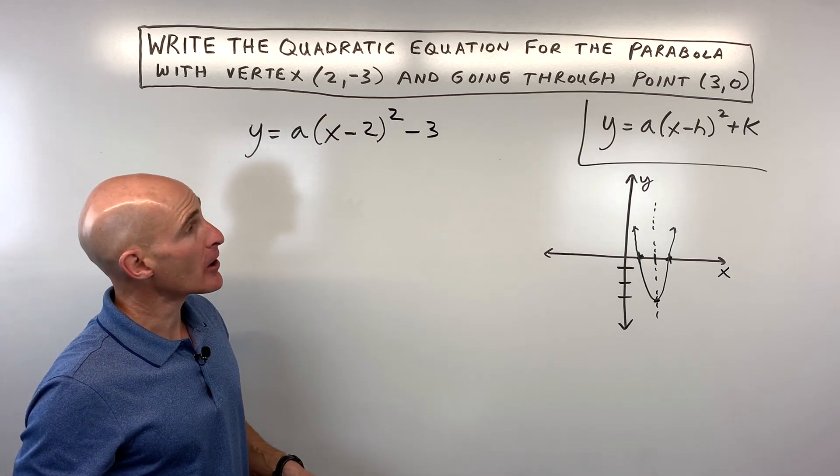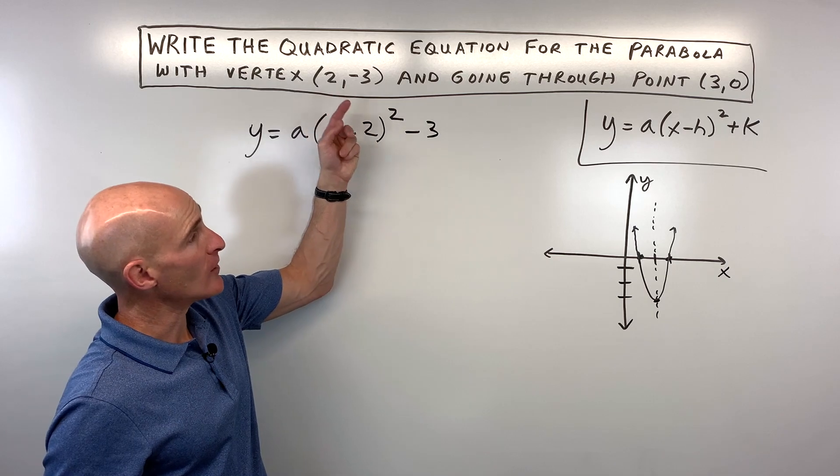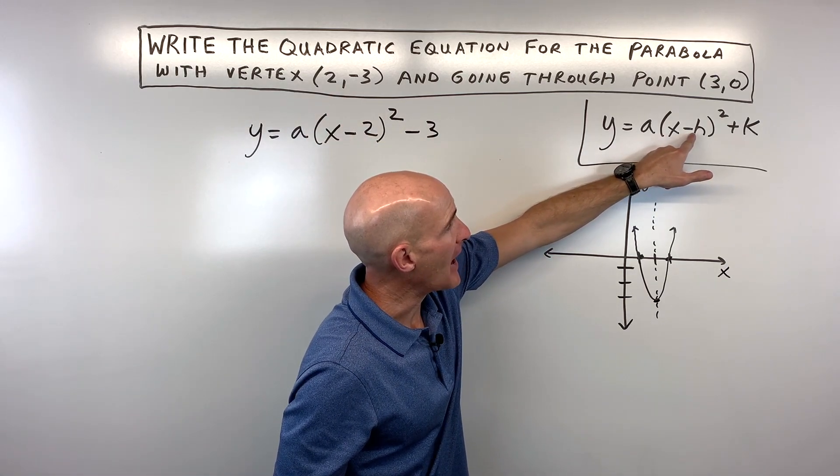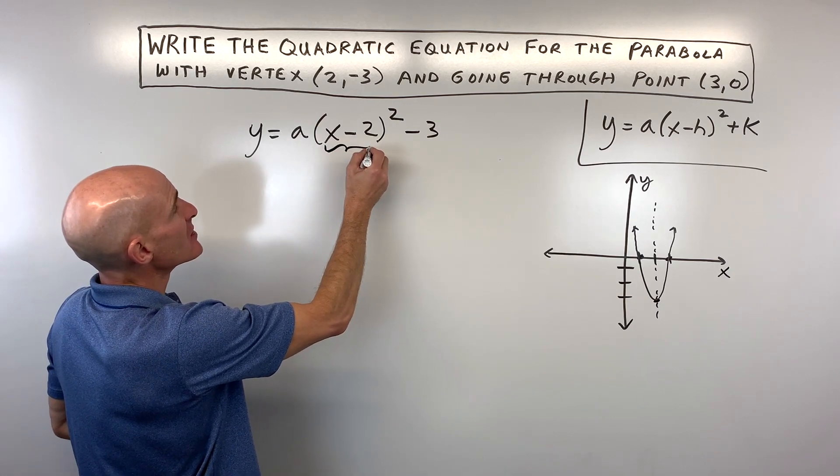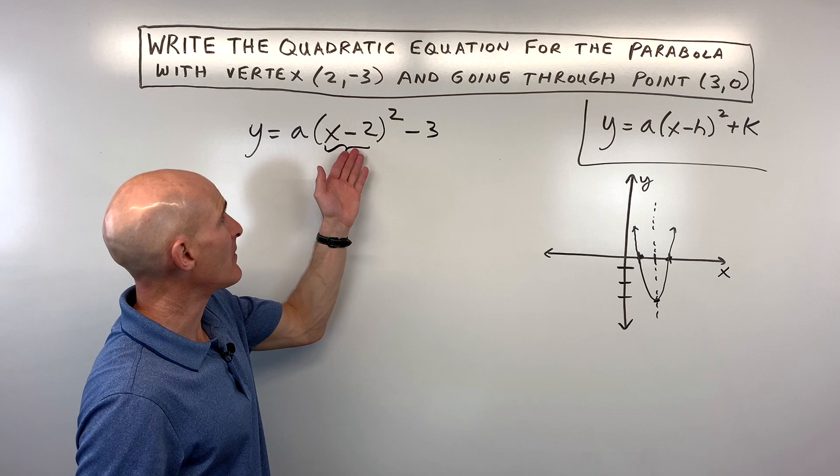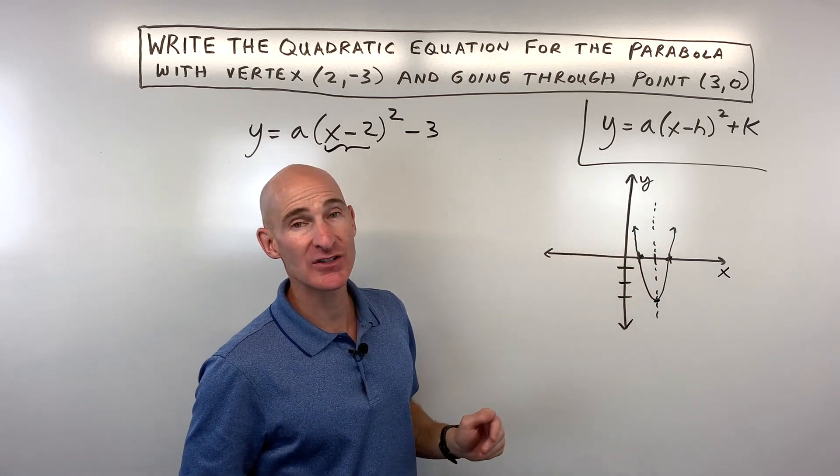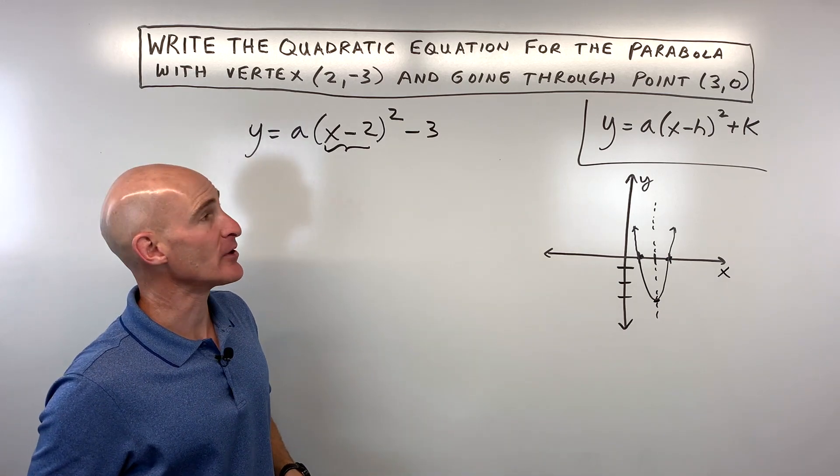Now you might be saying, Mario, why is this minus 2 when this is a positive 2? Well, see how this says x minus h? Another way that students sometimes like to think about it is this number that's grouped with the x has the opposite effect on the graph. The minus 2 is actually shifting it positive 2 to the right. And this k value, the minus 3, has the same effect—it's shifting it down 3.